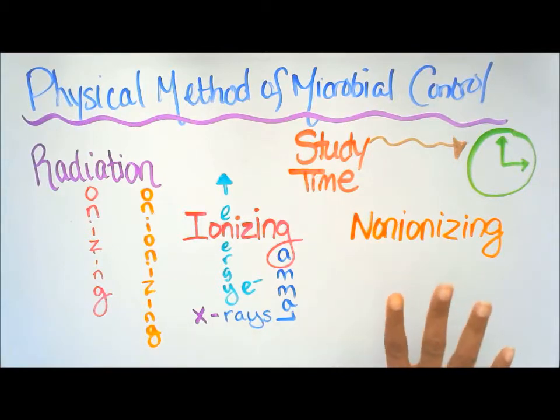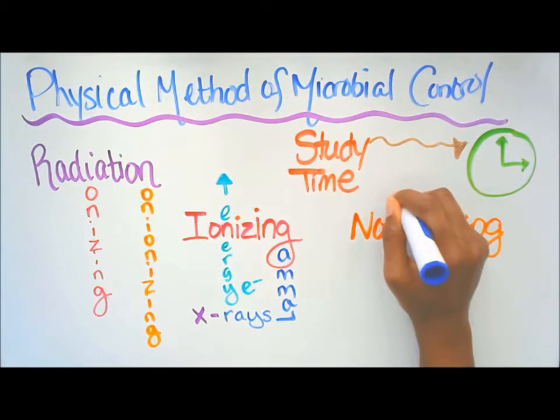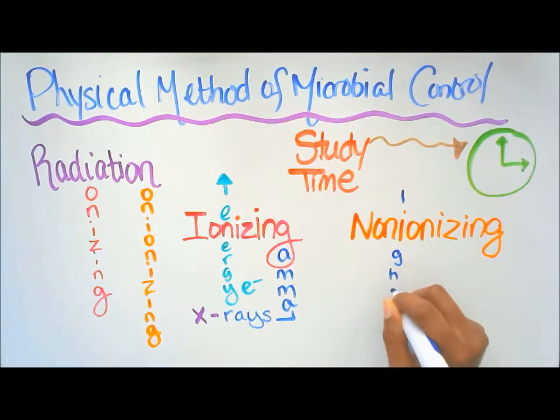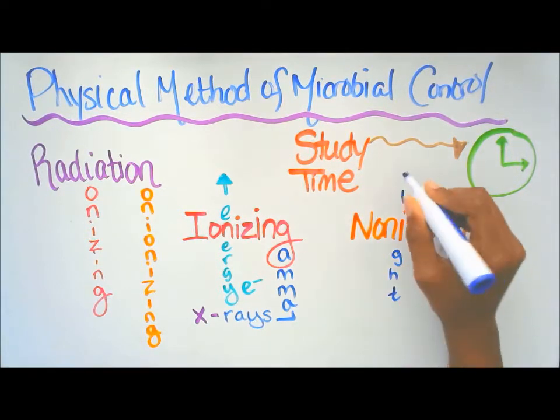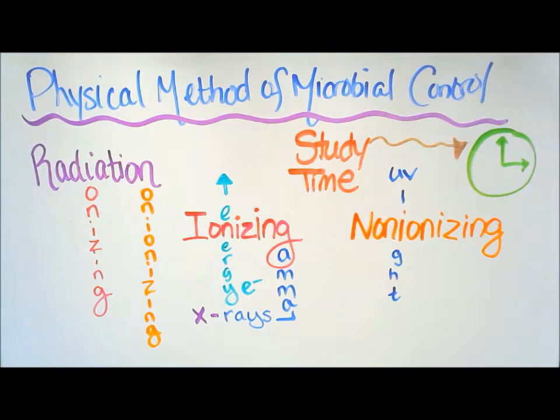Now with non-ionizing, it's UV light. So here we're going to use the L for light, and we're going to put UV. So for non-ionizing we have UV light.